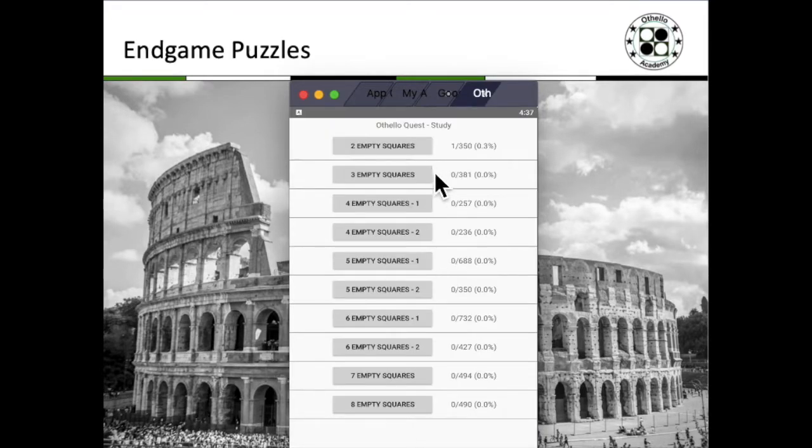Over here, you can find puzzles that are as simple as two empty squares, which we've seen in the A-B counting earlier, and puzzles as complex as eight empty squares. You can just do the puzzles, and they would track your progress.